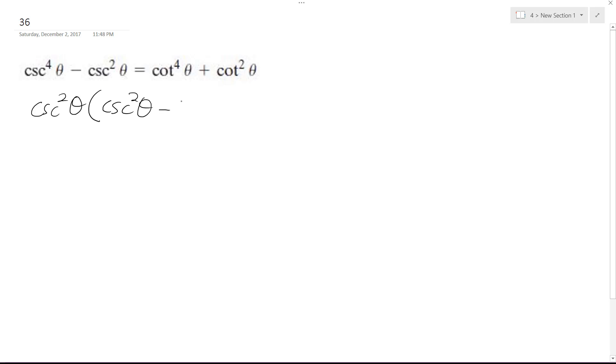I'm going to have a cosecant squared theta minus one is equal to cotangent squared theta, cotangent squared theta plus one.